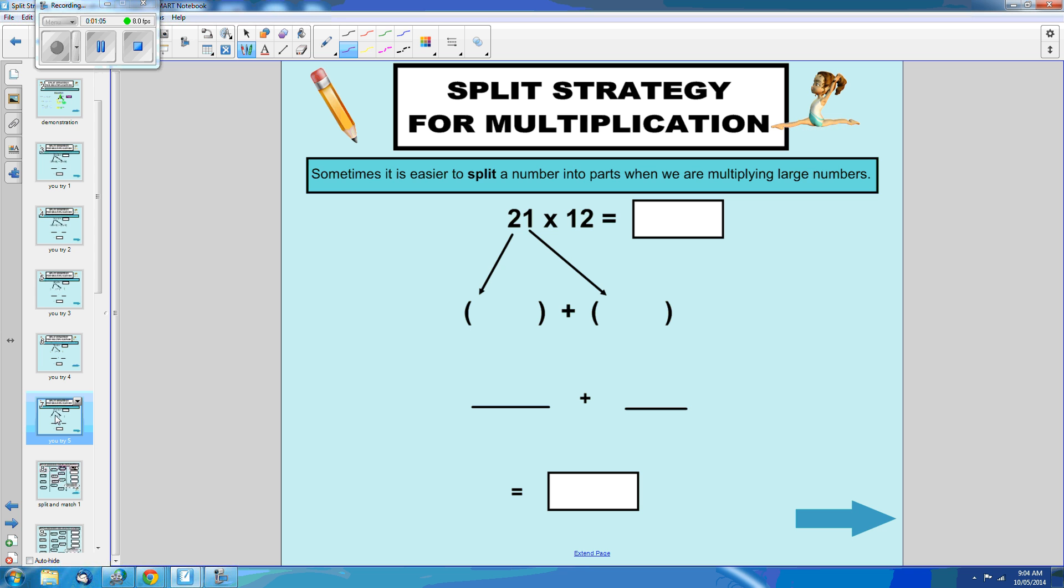We are going to split 21 into tens and ones. We have 20 and we have 1. Now we need to multiply those tens and ones by the 12.